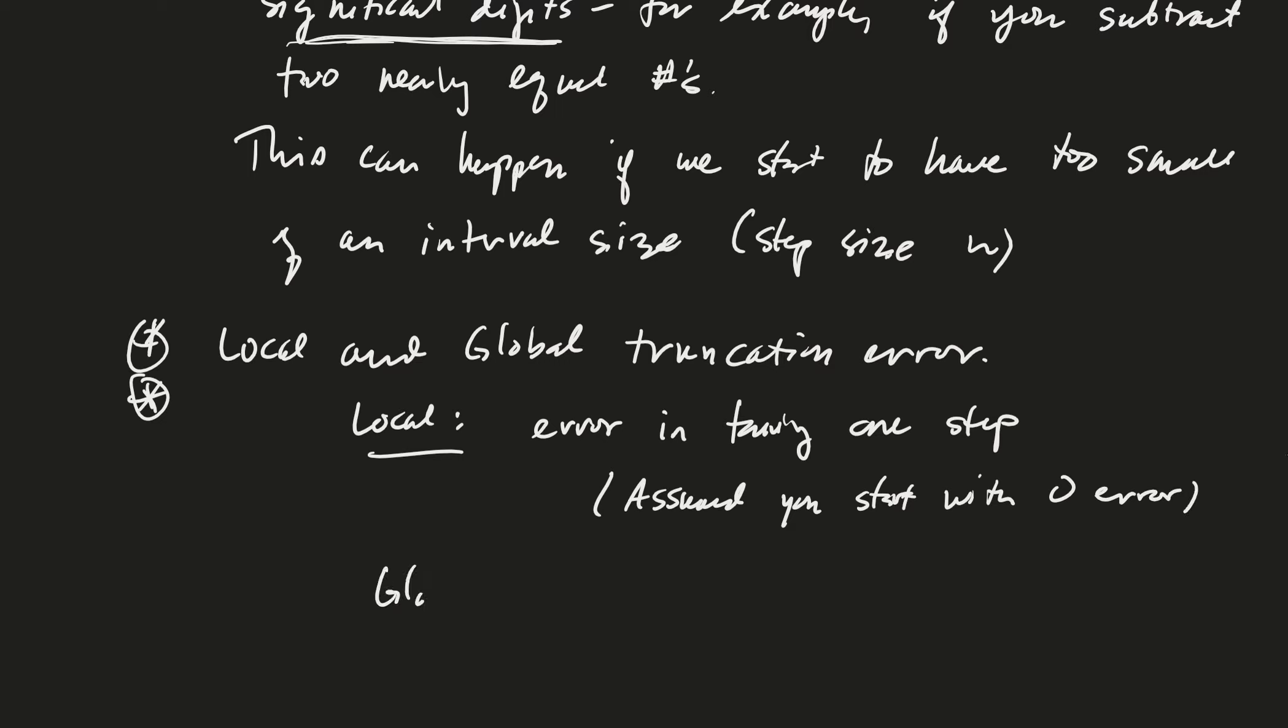Global truncation error is the cumulative error. The idea is that as the step size goes to zero, theoretically the truncation error should drop to zero. When we come back in the next video, we'll touch upon the error we see in Euler's method.